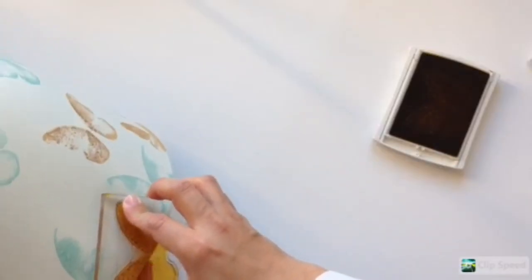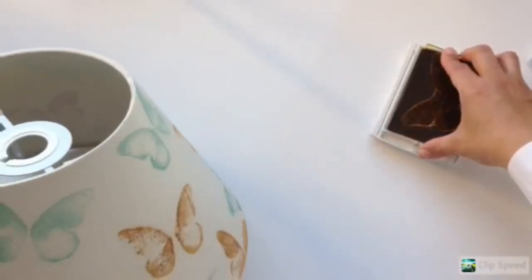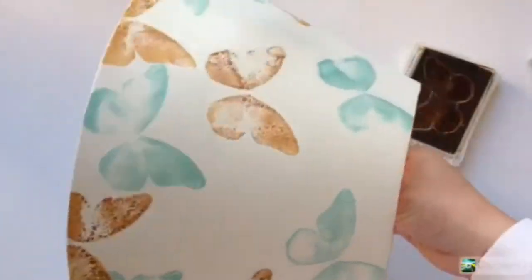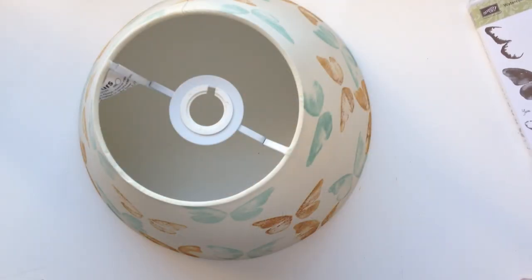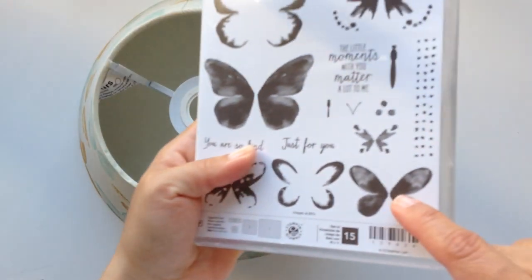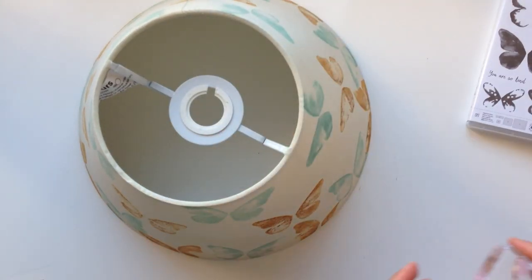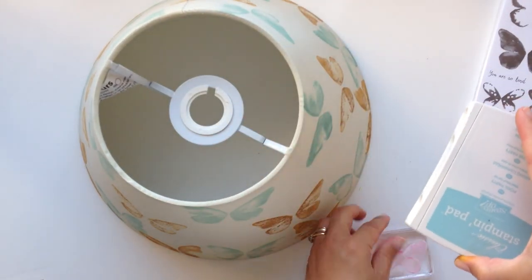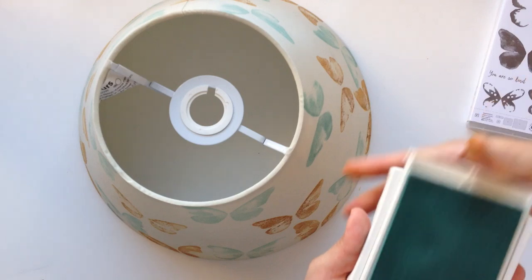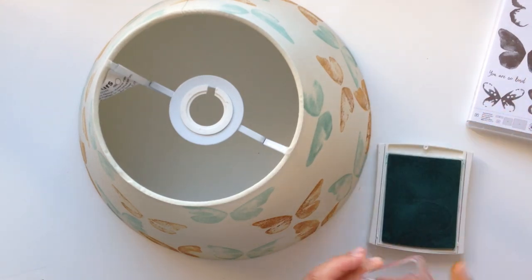This is how it looks after applying this ink. I'm going to use now a small stamp from the same set—it's this one here—and I'm going to stamp that image with Pool Party ink randomly, just in those gaps between the big butterflies.